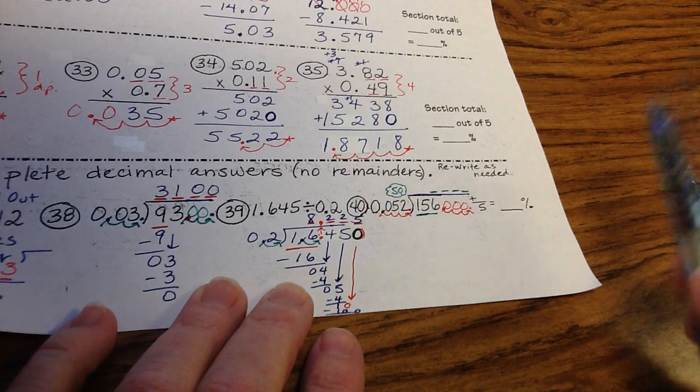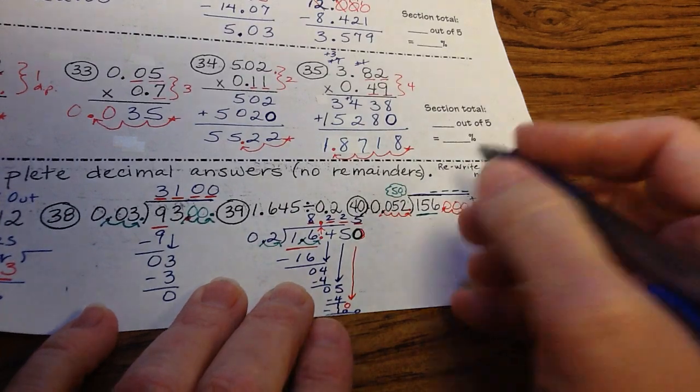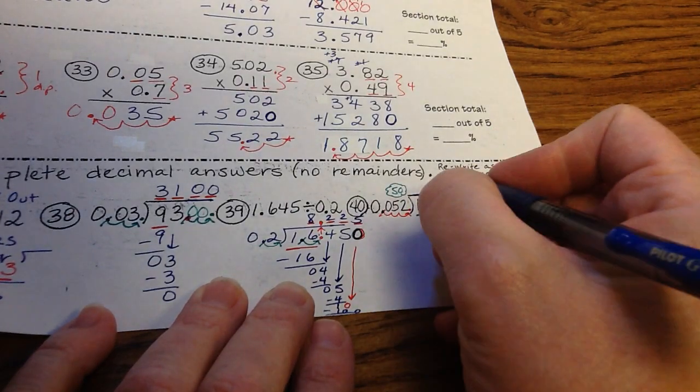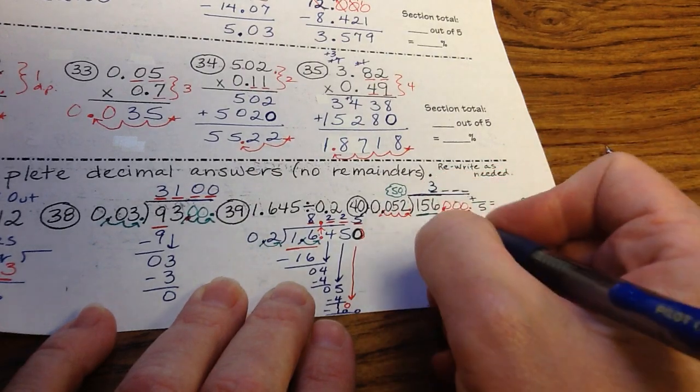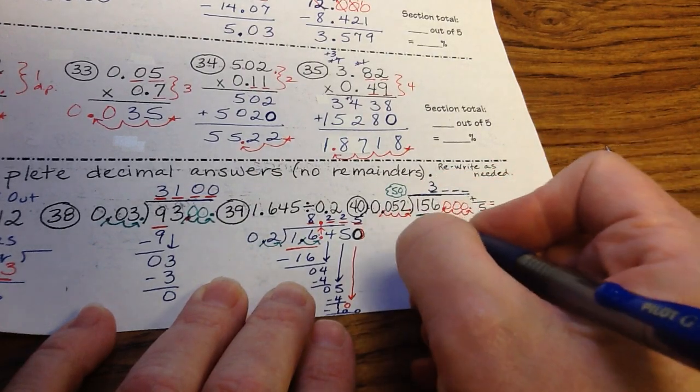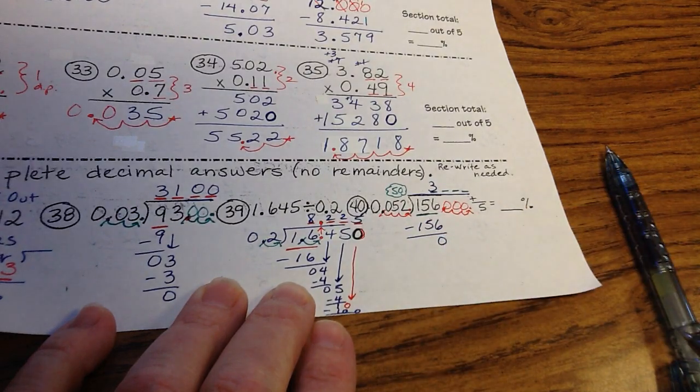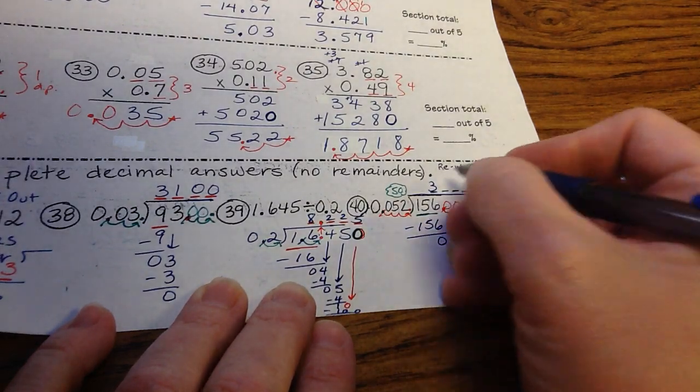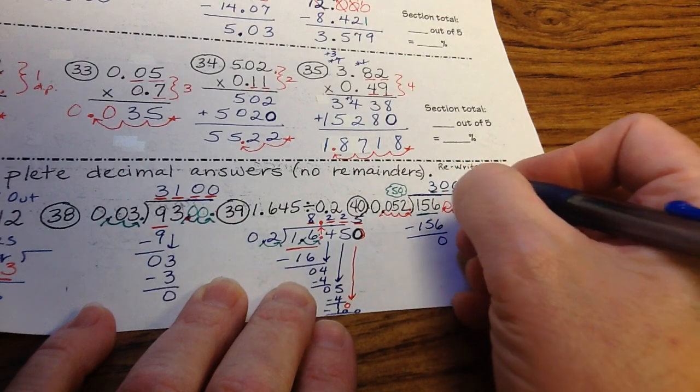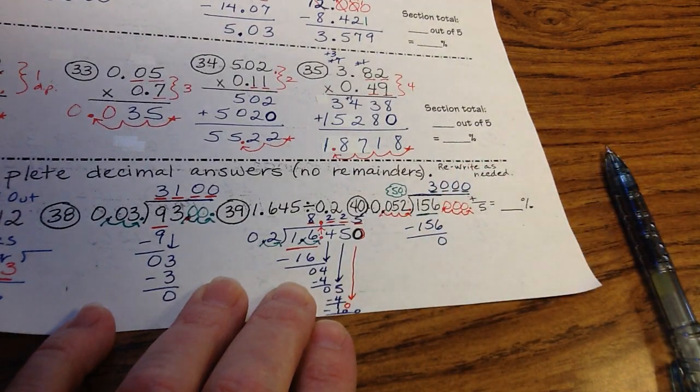But we decided that 52 into 156 would be like 5 into 15, 3 times. 3 times 2 is 6. 5 times 2 is 15. That's perfect. 0. We have nothing here, but the answer is not 3. We've got to fill in those extra spaces. So the answer is actually 3,000. And that's it.